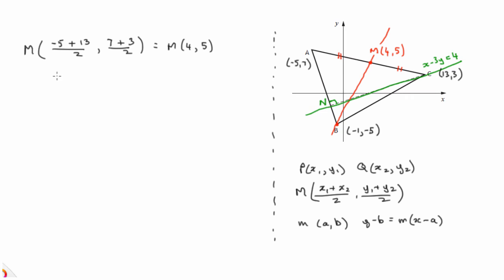So do we know the gradient of that line? No, we don't. But let's work that out. So the gradient of B to M will be the y difference, 5 minus (-5), over the x difference, 4 minus (-1). So that's 5 plus 5 is 10, 4 plus 1 is 5. That's 2. That's a gradient of 2, 1 along, 2 up. That looks pretty good. That's your reality check.